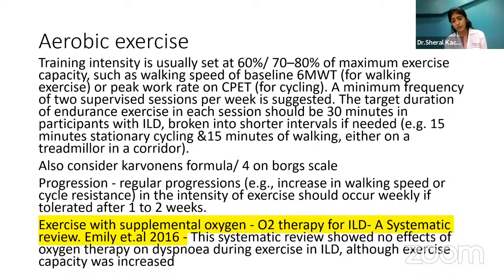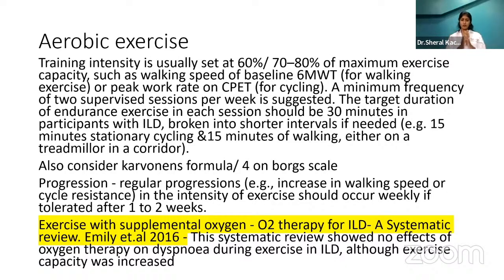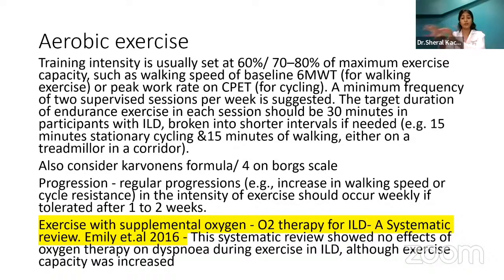Regular progressions in exercise intensity should occur weekly if tolerated after 1–2 weeks — increasing walking speed or cycle resistance. But you know your patient — at times it's a difficult task and you can't progress within 2 weeks and need more time. Guidelines are there, but you should know how to apply them correctly. By treadmill or cycling, don't progress fast. Start with 5 minutes, see how the patient is coping, let there be a feeling of confidence and safety, then progress properly.